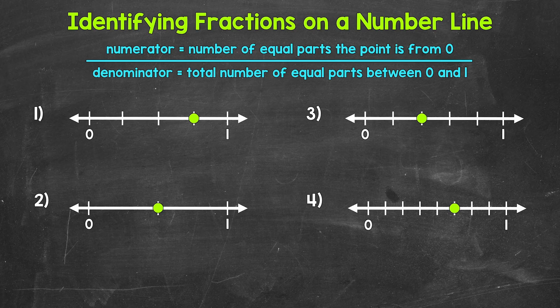Let's jump into number one, where we need to figure out the fraction being represented on that number line. Notice we have zero and one here, so a distance from zero to one — we can think about this like one whole. The green point marking our fraction is in between zero and one, so we don't quite have one. We have part of that distance, part of that whole. This is going to be a fraction.